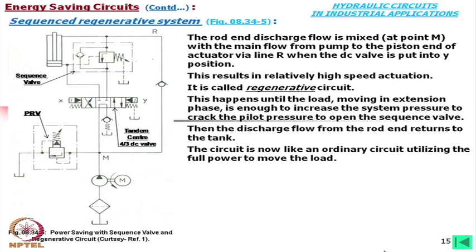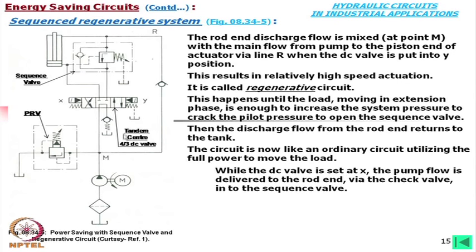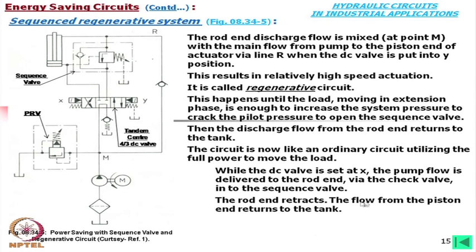This circuit is now like an ordinary circuit utilizing the full power to move the load. While the DC valve is set at X, the pump flow is diverted to the rod end via the check valve into the sequence valve. The rod end retracts and the flow from the piston end returns to the tank — again like an ordinary circuit. The thing is, if we omit this sequence valve, this will operate at the same speed — the full flow will be mixed and go there, but power will increase. Without the sequence valve, this whole circuit is a regenerative circuit. With it, we should call this a regenerative circuit with energy saving.